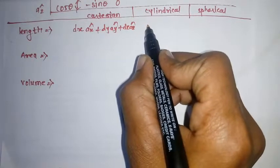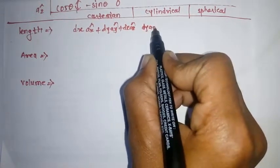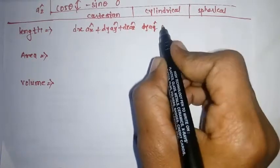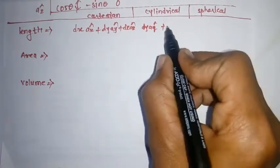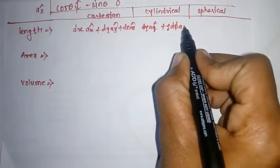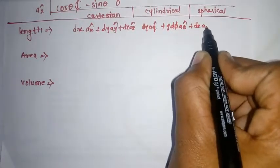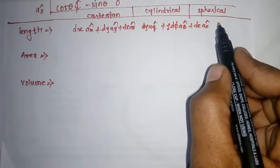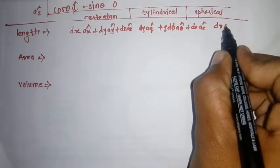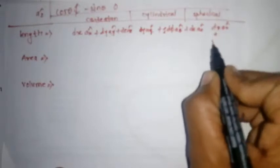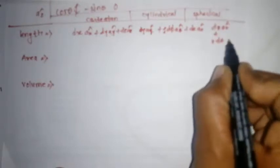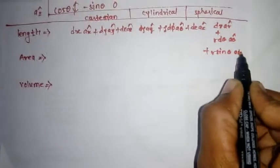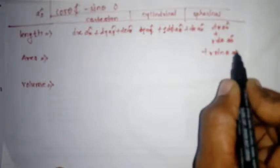In cylindrical, dL is written as: d_rho a_rho cap plus rho d_phi a_phi cap plus dz a_z cap. In spherical, dL is written as: dr a_r cap plus r d_theta a_theta cap plus r sine(theta) d_phi a_phi cap. This is how we write the length element.